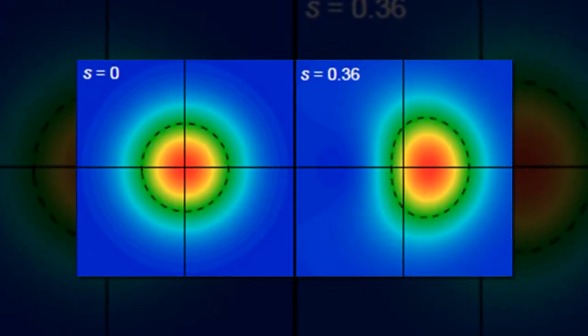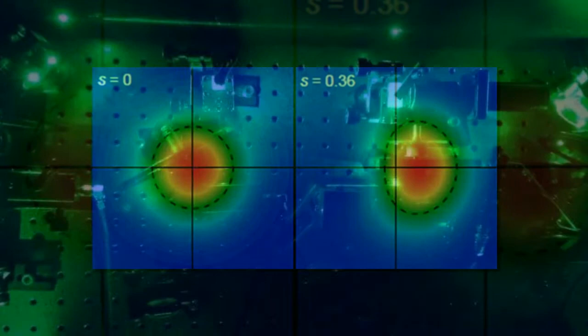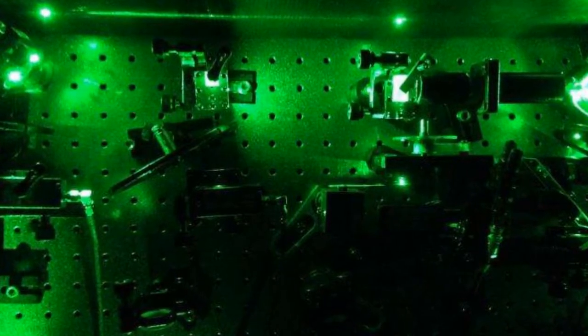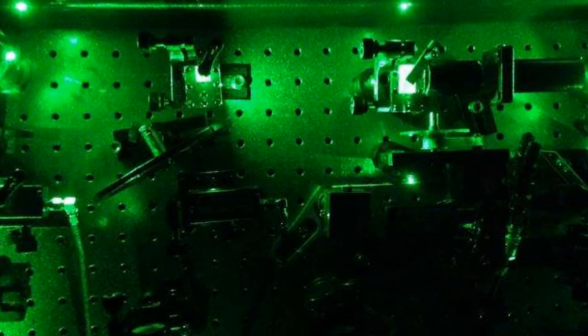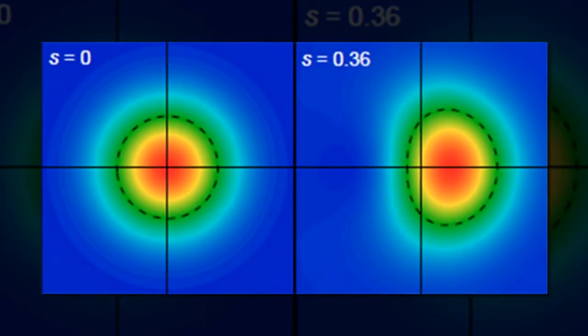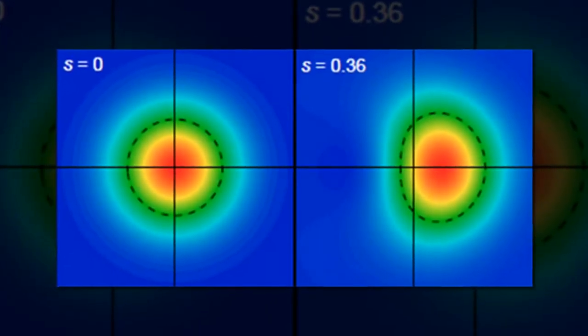Squeezing is a strange phenomenon of quantum physics. It creates a very specific form of light which is low noise and is potentially useful in technology designed to pick up faint signals, such as the detection of gravitational waves.